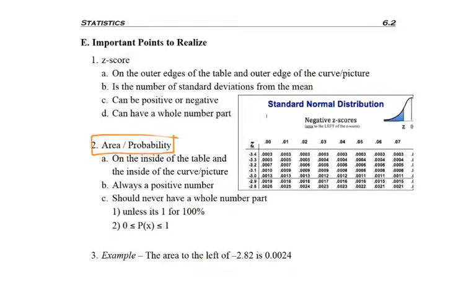To talk about the area or probability in terms of the curve, these are the numbers that are on the inside of the table and the inside of the curve. This section right here, this is all the area.